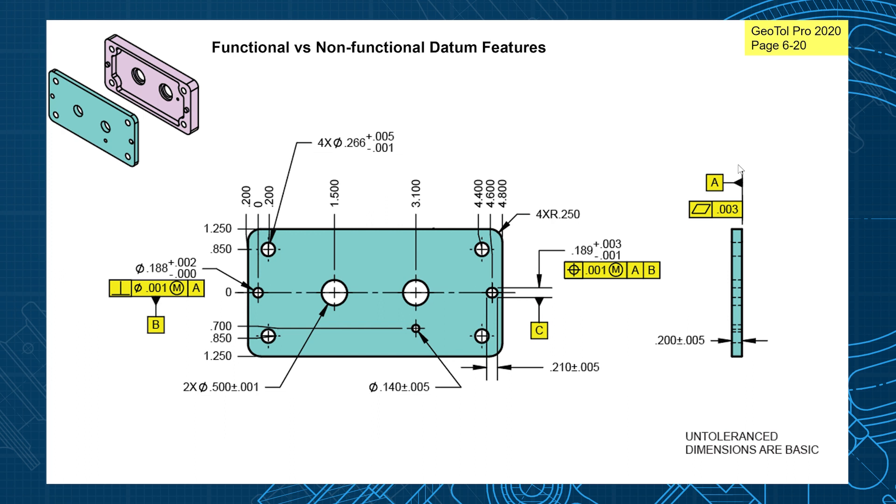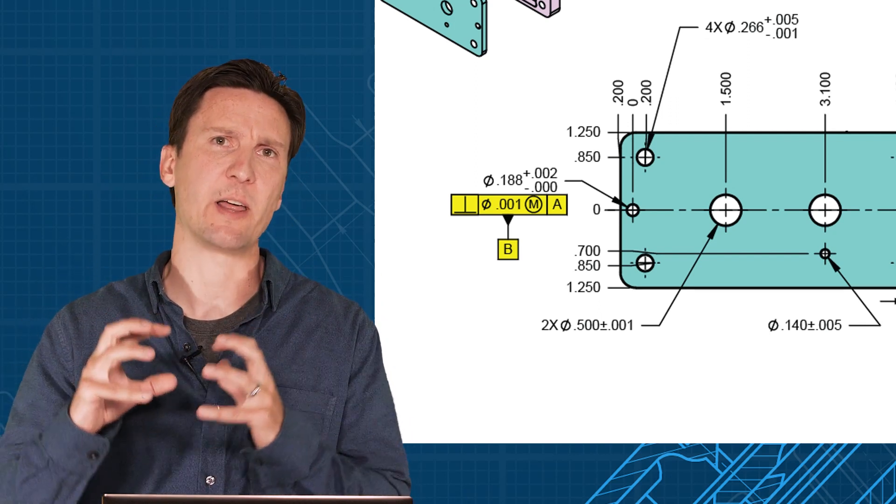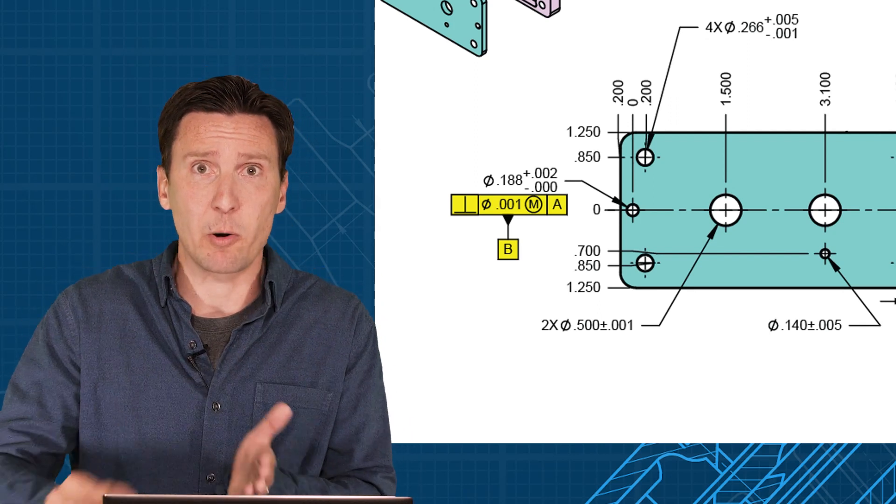A will be the main face that it mounts to, B will be this hole that we want to be perpendicular to that A, and C is going to be this slot that we want positioned in very tightly to A and B. All of our features on this part should be referenced relative to that ABC reference frame because that's how the parts fit up.